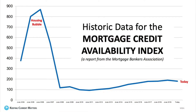Mortgage standards are actually drastically different than they were leading up to the housing bubble. The Mortgage Credit Availability Index is released by the Mortgage Bankers Association each month. It measures a lender's willingness to take on additional risk. The higher the index, the easier it is to get a loan and the less stringent the qualification requirements. The lower the index, the harder.